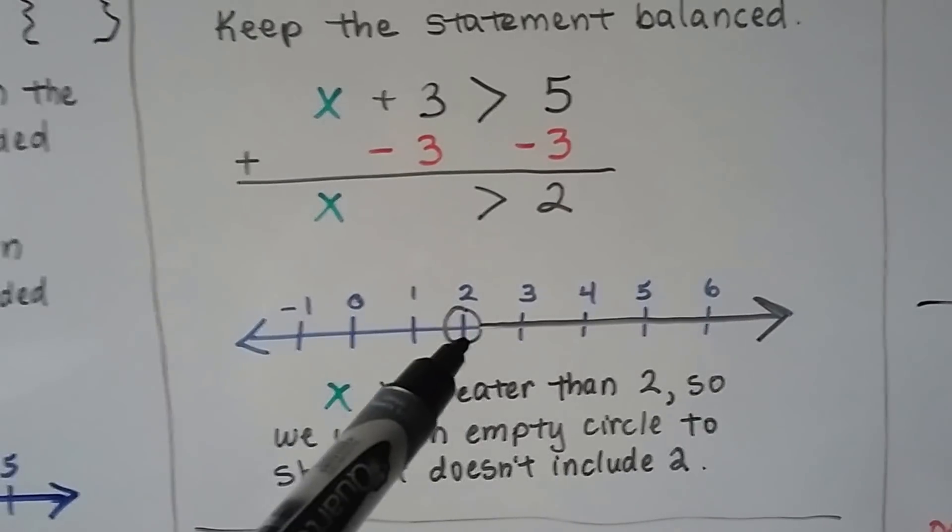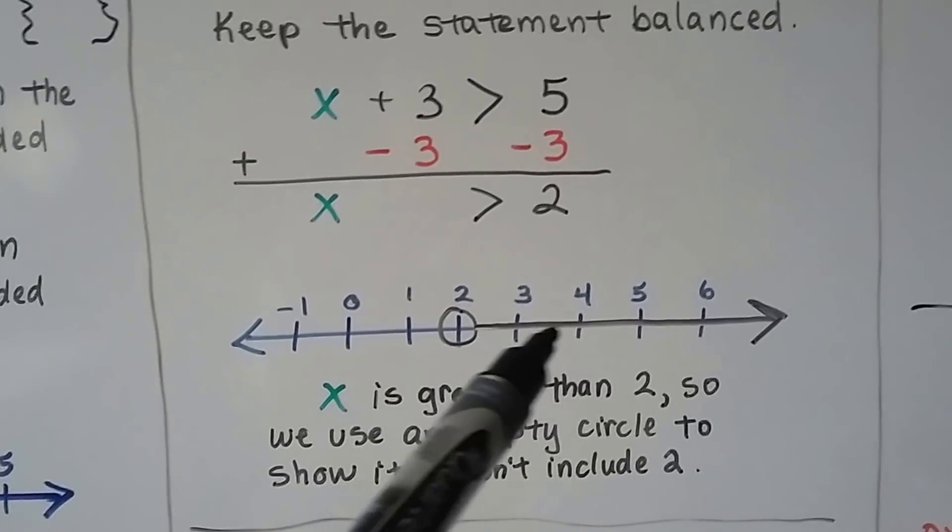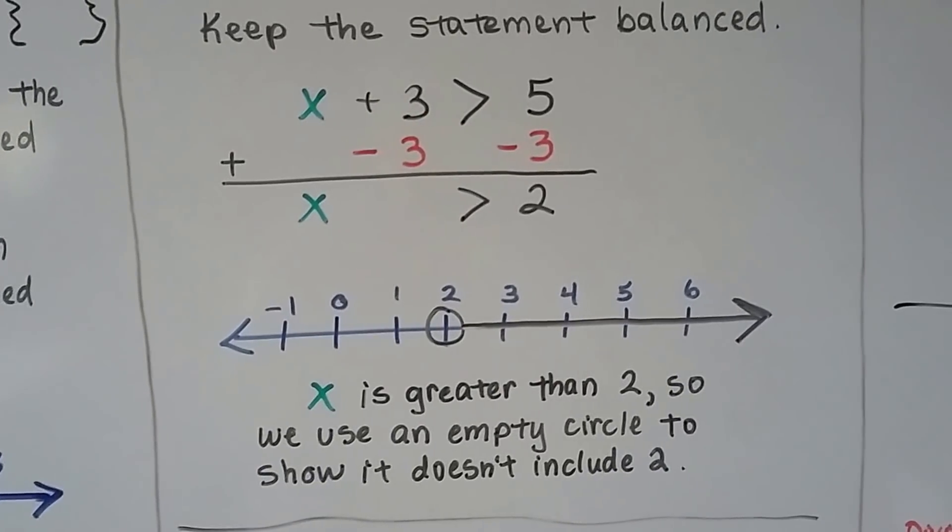x is greater than 2, so we use an empty circle to show it doesn't include 2. So it doesn't include 2 because it's bigger than 2. So it's any number that's bigger than a 2 but doesn't include the 2.